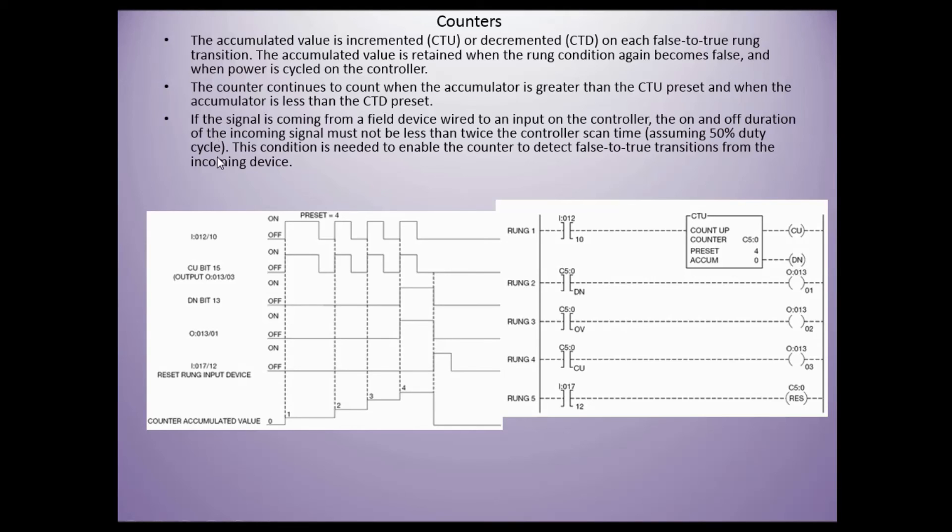If the signal is coming from a field device wired to an input on a controller, the on and off duration of the incoming signal must not be less than twice the controller scan, assuming 50% duty cycle. This condition is needed to enable the counter to detect a false to true transition from the incoming device. Keep that in mind if you have something you're trying to count that's very fast. This counter may not be able to do that for you.